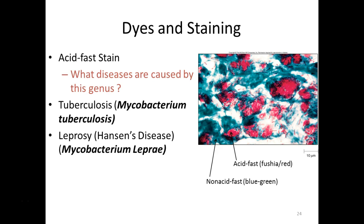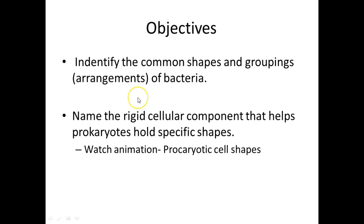There are lots of different shapes for bacteria. Some prokaryotes like archaea also have these shapes, but we focus mainly on bacteria. Some bacteria stay together after dividing and form characteristic groupings called arrangements. The rigid cellular component that helps prokaryotes hold specific shapes is the cell wall. There are animations posted on prokaryotic shapes that are highly recommended for visual learners.